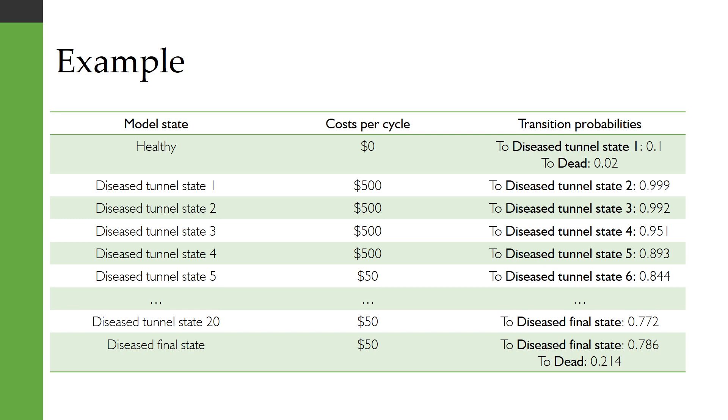So let's look at the different states we have in our model. We have a healthy state. We're not tracking any payoffs in here so let's just give it a cost of zero dollars per cycle. And people are entering the disease state at a rate of 0.1 or with a probability of 0.1 each cycle and they're dying with transition probability 0.02.